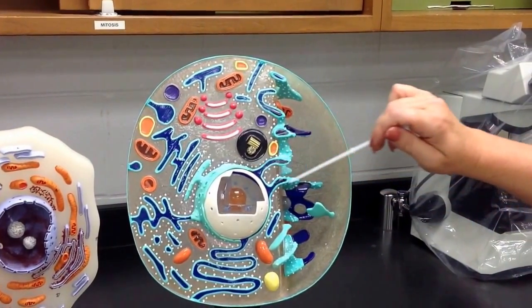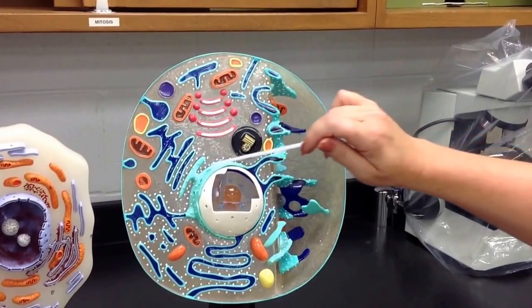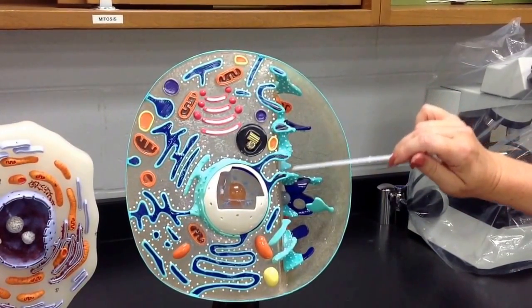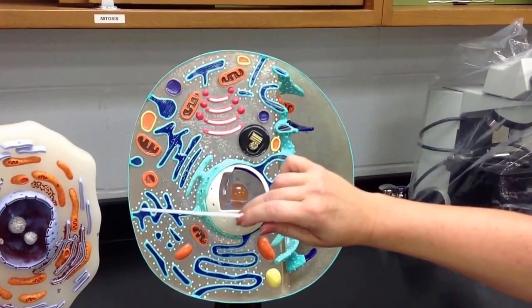All of this around here is the rough endoplasmic reticulum. This is where it's not cut open. Here is the same thing it's just been cut open.